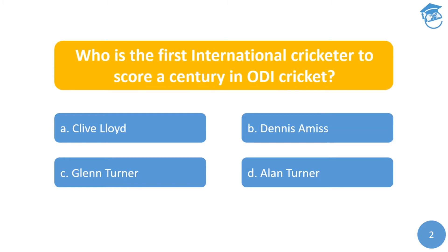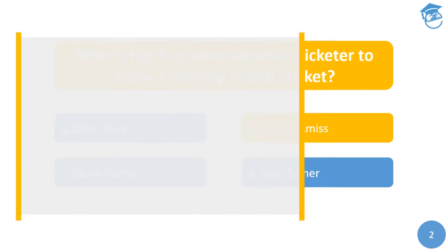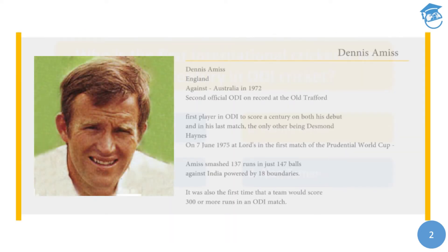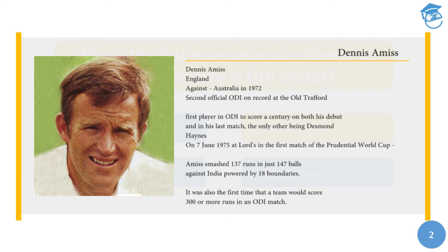The answer is Dennis Amiss. Dennis Amiss scored a century against Australia in 1972 in the second official ODI on record at Old Trafford. He is also the first player in ODI cricket to score a century on both his debut and his last match, the only other being Desmond Haynes.